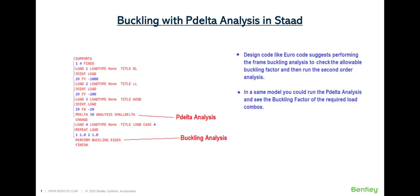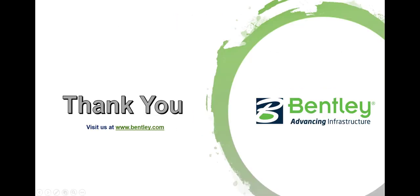A last quick note: in a STAAD model with numerous primary load cases, international steel design codes like Eurocode advise first checking stability by performing buckling analysis and comparing if the buckling factor is within the specified range for specific gravity load combinations, then depending on that, performing second-order analysis. In the same model you can perform buckling analysis for selected load combos in conjunction with P-delta analysis — call the load combos by repeat load case just after the P-delta analysis, followed by the change command, then perform the buckling analysis. You can see the syntax on screen. Thank you all for attending this session. We will now open the floor for questions.